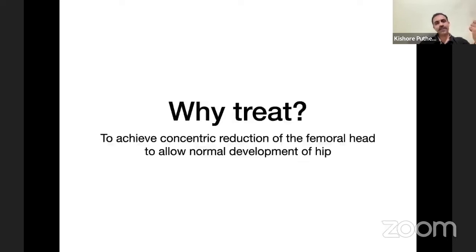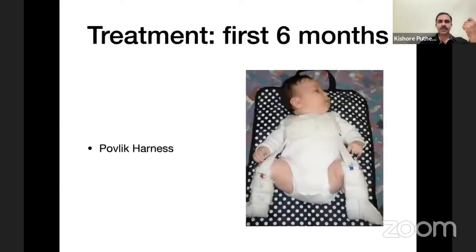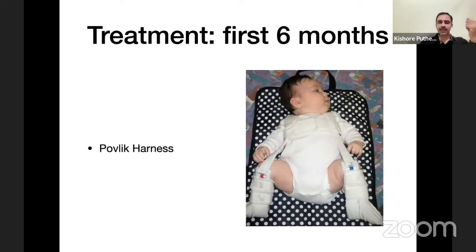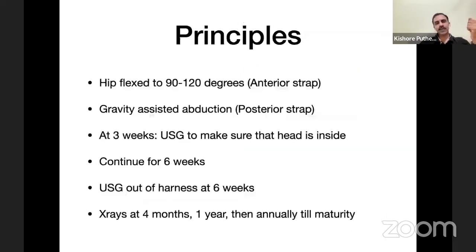Why treat DDH? To achieve concentric reduction of the femoral head to allow normal development of the hip. For the first six months, the treatment is the Pavlik harness. It has a chest strap, shoulder strap, stirrups, and anterior and posterior straps.